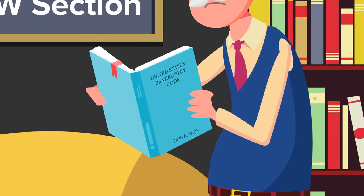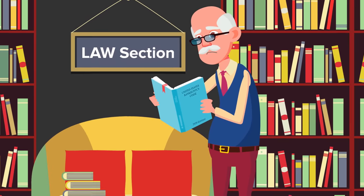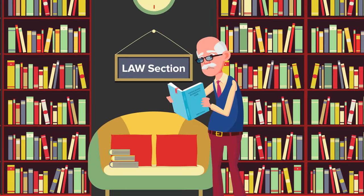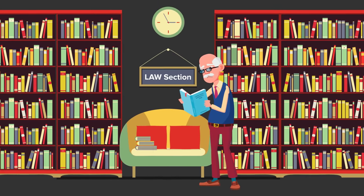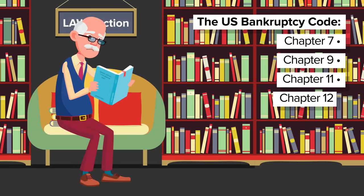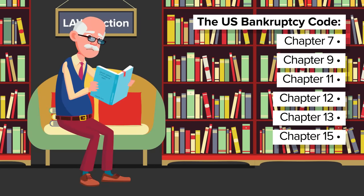Today we are discussing the basics of how personal bankruptcy functions in the United States. There are actually six different possible types of bankruptcy in the United States. They are each named for the portion of the bankruptcy code they are found under: Chapter 7, Chapter 9, Chapter 11, Chapter 12, Chapter 13, and Chapter 15. Each chapter addresses a different type of bankruptcy.